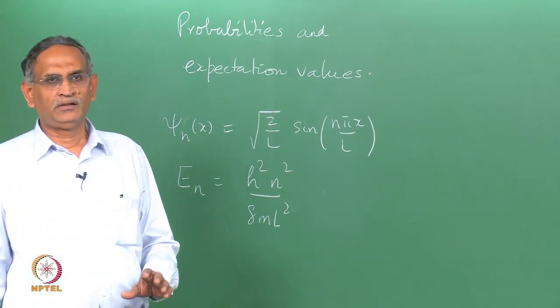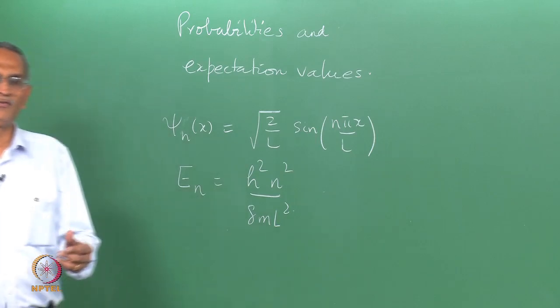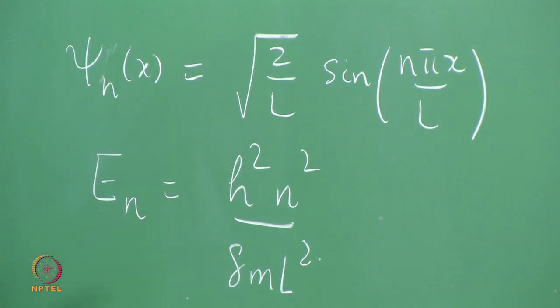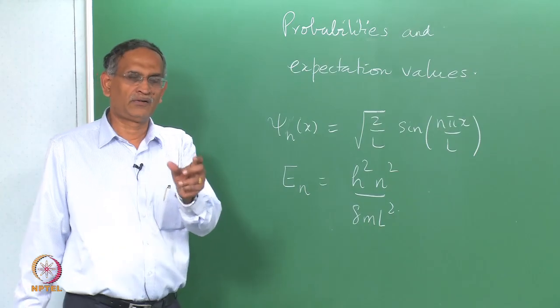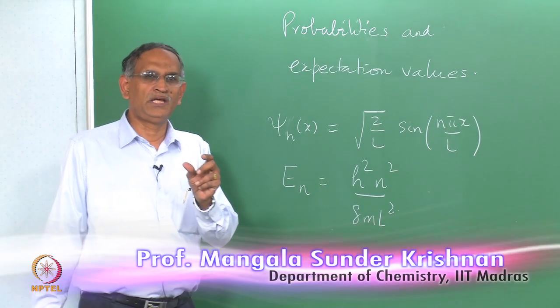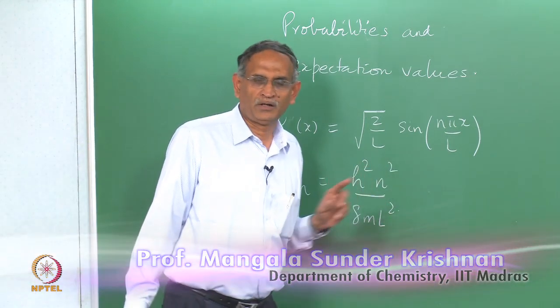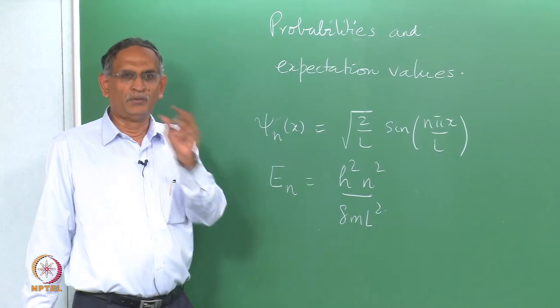Since ψ*ψ is the probability density at any point x, and ψ*ψ at the small interval dx around x gives you the probability that the particle is in that small region.